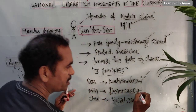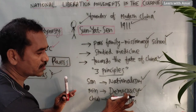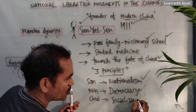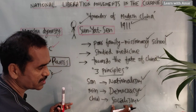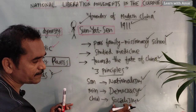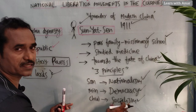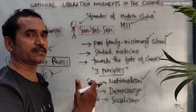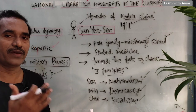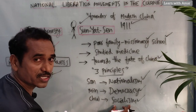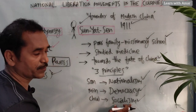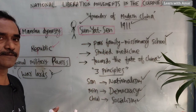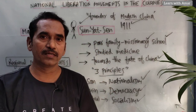Next, Democracy (Min) — he wanted to establish a democratic government in China. And Socialism (Chui Min) — all the factories and industries in the hands of government, production in the hands of government, working towards people's welfare, and also distribution of lands to the landless people. He wanted to implement all these three principles so that China would become a developed country.